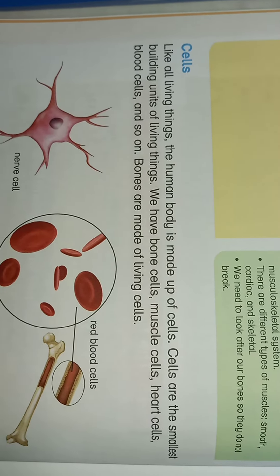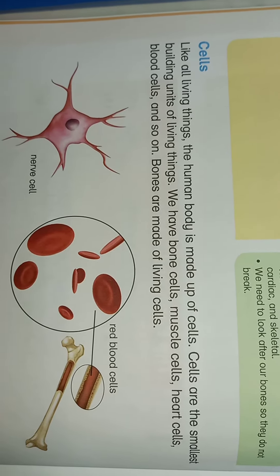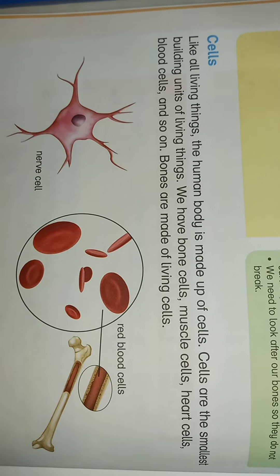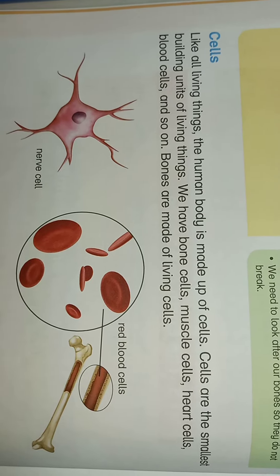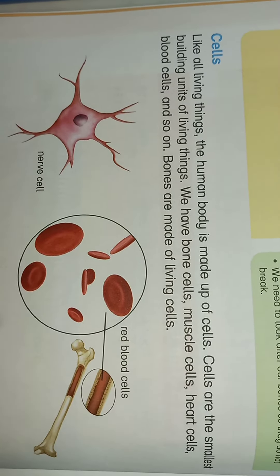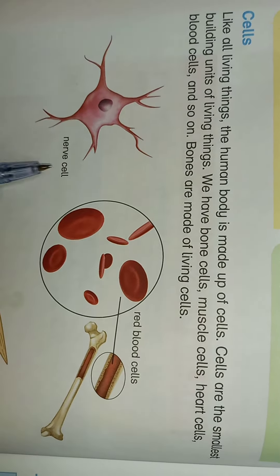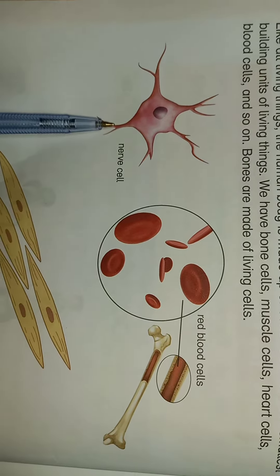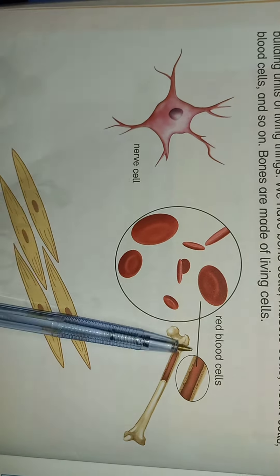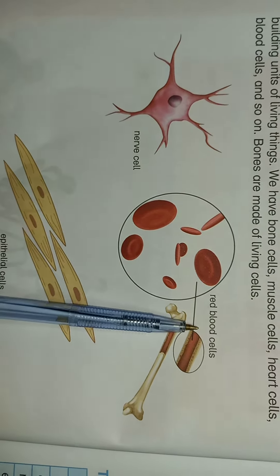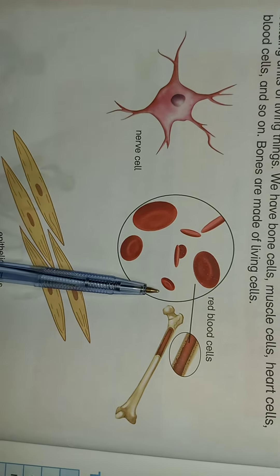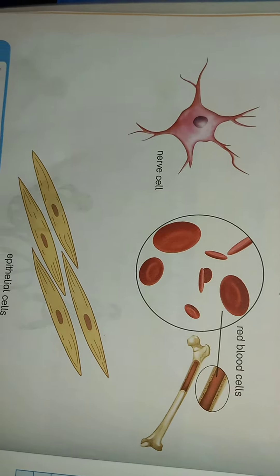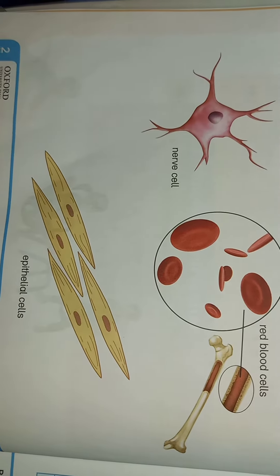When we get different types of cells, we make tissue, and they perform the same functions. Here we have a single cell which connects with the brain, a red blood cell which connects with the heart, and an epithelial cell which connects with the skin.